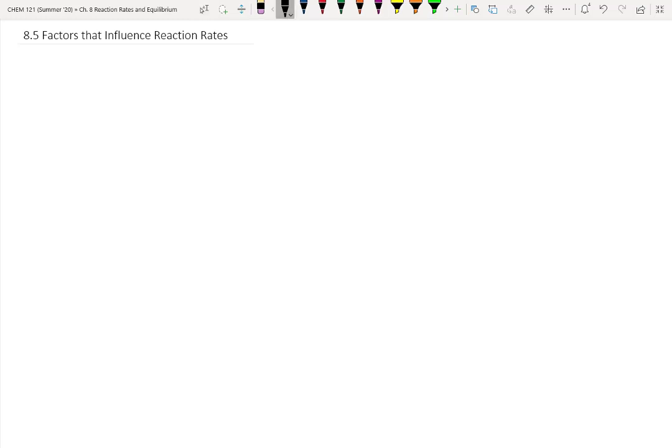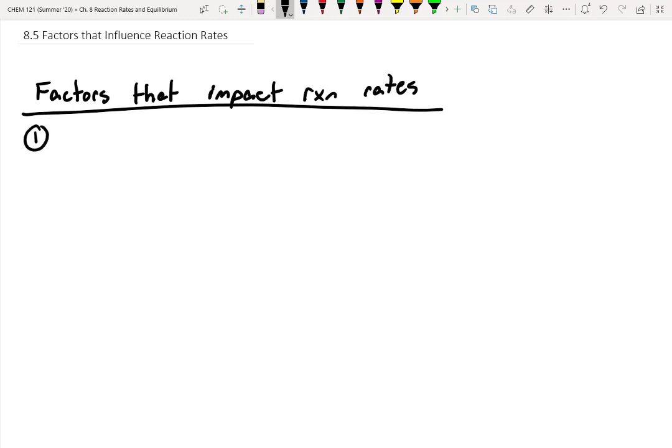Okay, in this next video we're going to look at factors that influence reaction rates, essentially what speeds reactions up. There's a variety of different factors that the book outlines, so let's go over them one by one and just make a little list. So factors that impact reaction rates, and I'm going to just abbreviate reaction there, makes it a little faster. All right, so the first one is a pretty big one: it's the nature of the reactants.